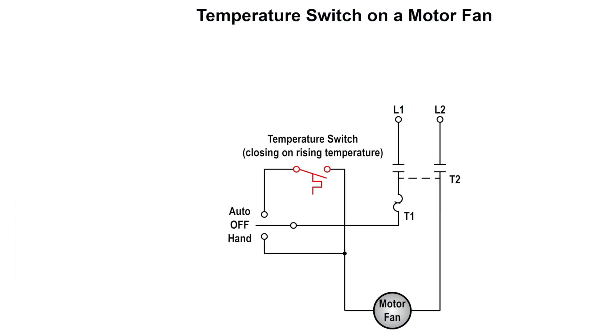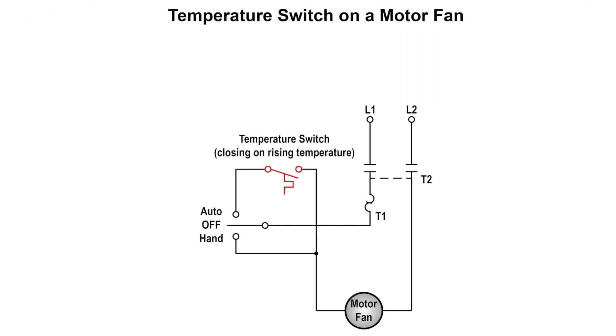In the example provided, when the selector switch is positioned in the auto position, the temperature switch will open and close accordingly to the predetermined set temperature. When the temperature rises above the set value, it will close and turn the motor on. When the temperature drops below the preset value, it will open the contacts and de-energize the motor.